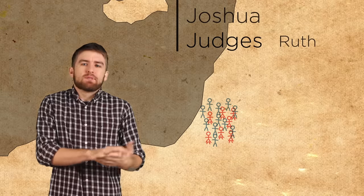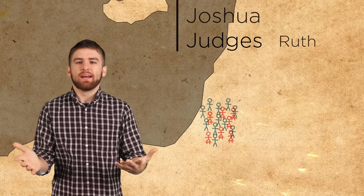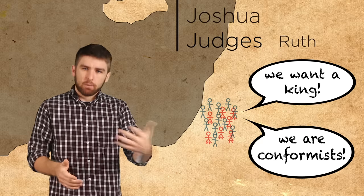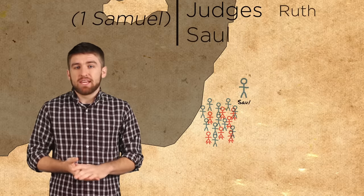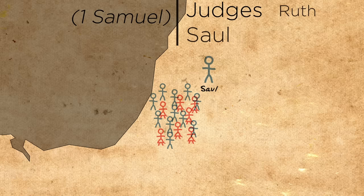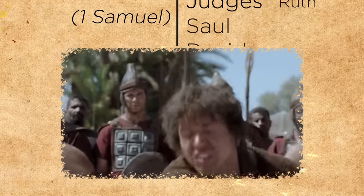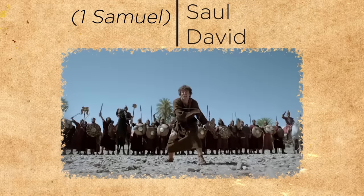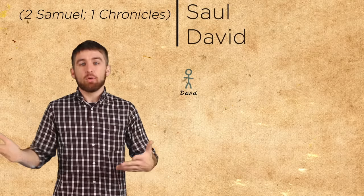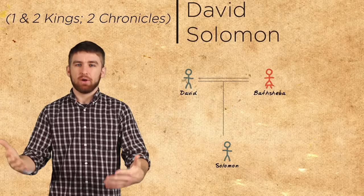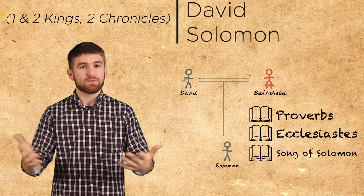The people of Israel see that all the other nations have a king and they plead with God to give them a king so that they can be like everyone else. God allows it and Saul becomes the first king of Israel. Israel is pleased and Saul leads them reasonably well, at least until they come up against the Philistines and of course Goliath. In comes David who slays Goliath and wins the war on Israel's behalf. David ends up becoming the next king and he wrote many of the Psalms. David was followed by his son Solomon, who wrote Proverbs, Ecclesiastes and probably also the Song of Solomon.